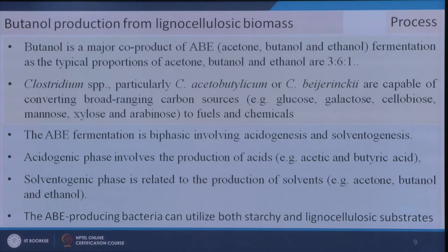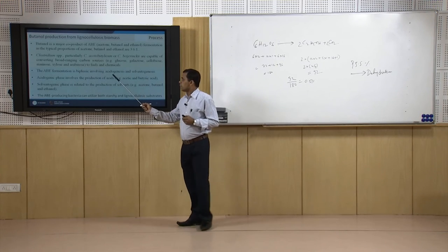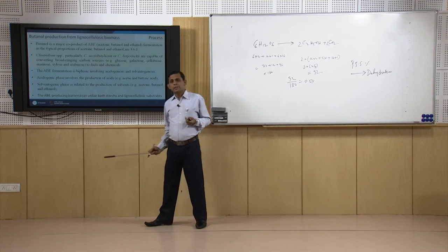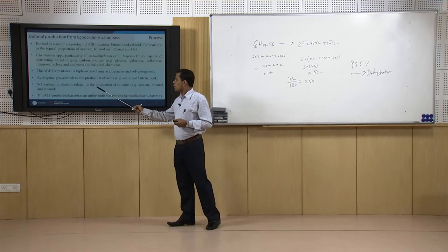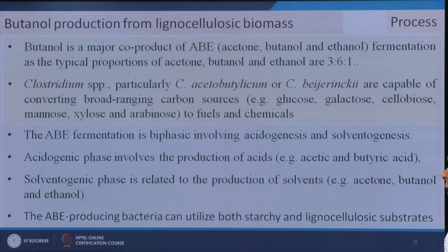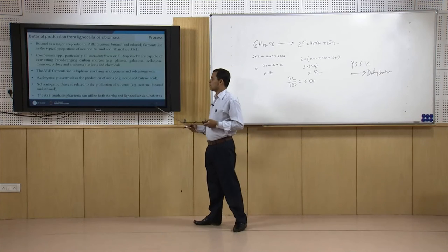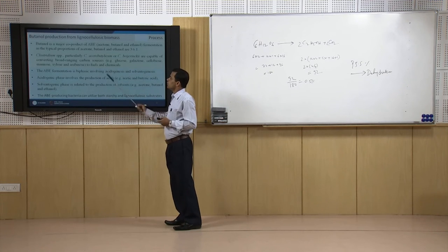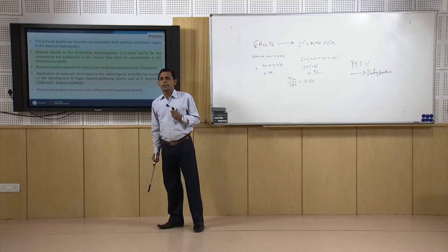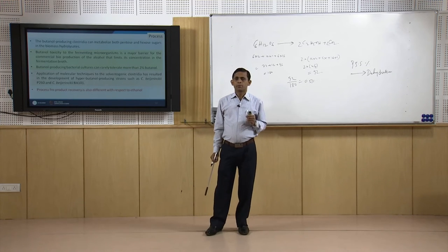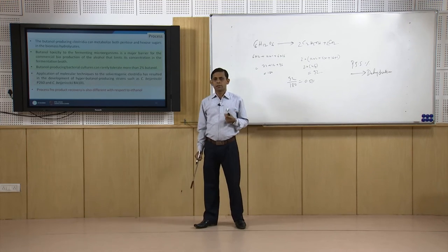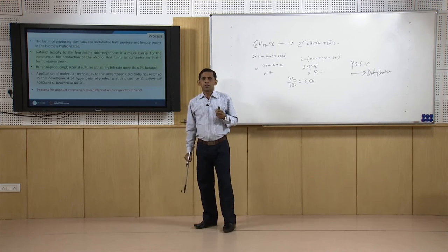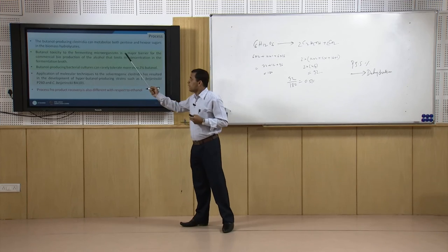ABE fermentation is a biphasic fermentation involving an acetogenic phase and a solventogenic phase. The acetogenic phase produces acids like acetic acid and butyric acid, and solventogenesis converts these to solvents — acetone, butanol, ethanol. The ABE-producing bacteria can utilize both starchy and lignocellulosic biomass. One important issue is that butanol produced in the media is toxic to the microorganisms; if its concentration exceeds about 2 percent, microbial growth is hampered, which is the main disadvantage of this process.